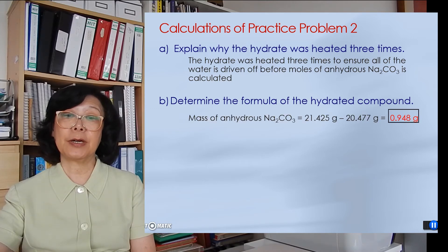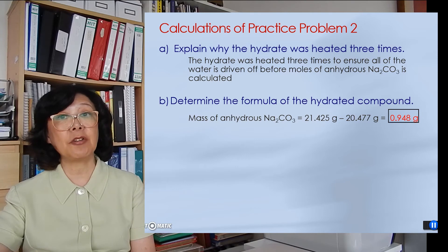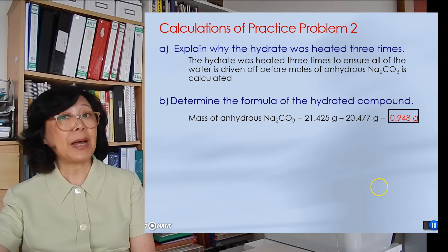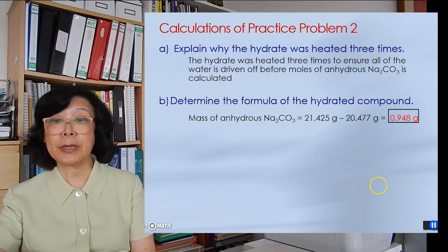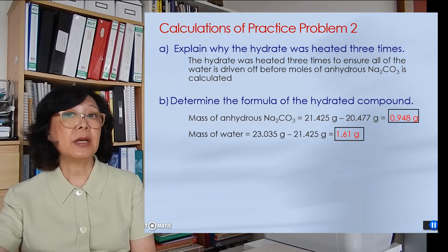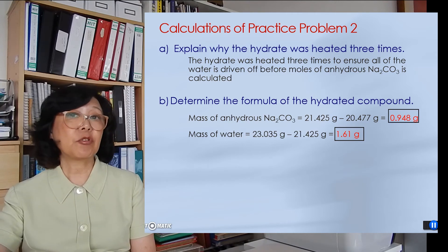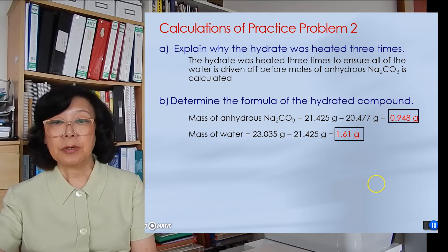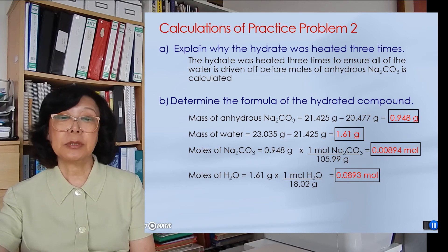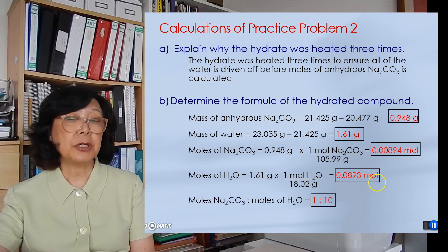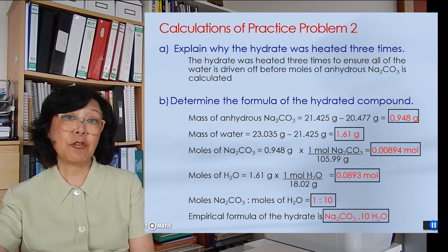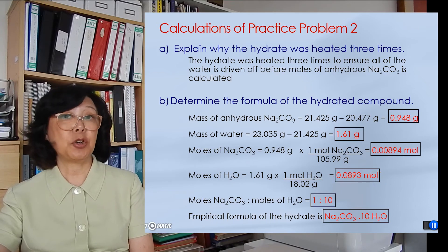To find the formula of the hydrate sample, we first find the mass of the anhydrous sodium carbonate by subtracting the empty dish from the final massing: 0.948 grams. To find the mass of water, we subtract the dish with anhydrous sample from the dish with the hydrate sample: 1.61 grams. Converting to moles gives a mole ratio of 1 to 10, which means the hydrate formula is sodium carbonate · 10H₂O.